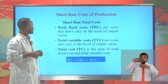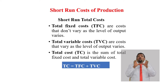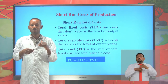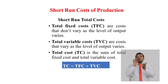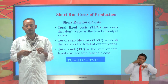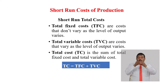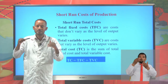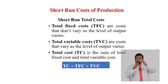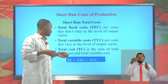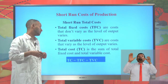Now let's see the short-run total costs: total fixed costs and total variable costs. The total fixed cost is a cost that does not vary as the level of output varies — even if there is an increase or decrease in output, if there is no change in that cost, it is considered a fixed cost. These fixed costs are costs of fixed inputs such as rent and land. The total variable cost is a cost that directly varies as the level of output varies — it increases as output increases and decreases as output decreases. The total cost of production is the sum of total fixed costs and total variable costs.